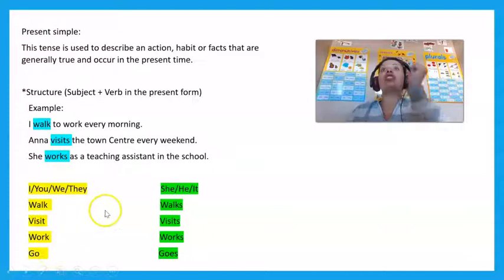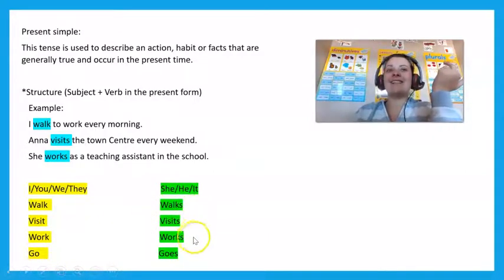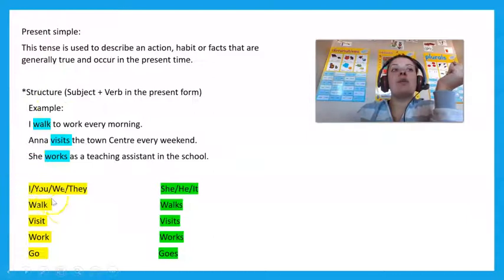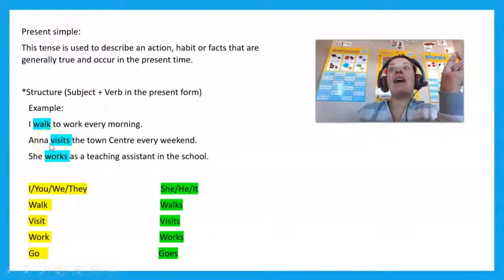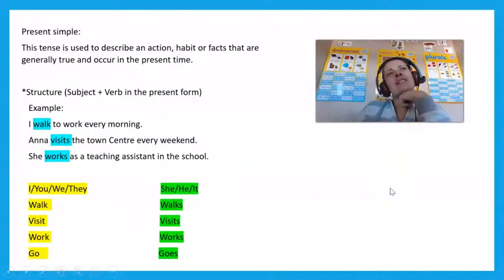But when it's she, he, or it, it would be walks, visits, works, or goes. For example, 'I' — so it'd be 'walk.' Anna — Anna is a she — so it would be 'walks' or 'visits.' Do you understand what is present simple tense?